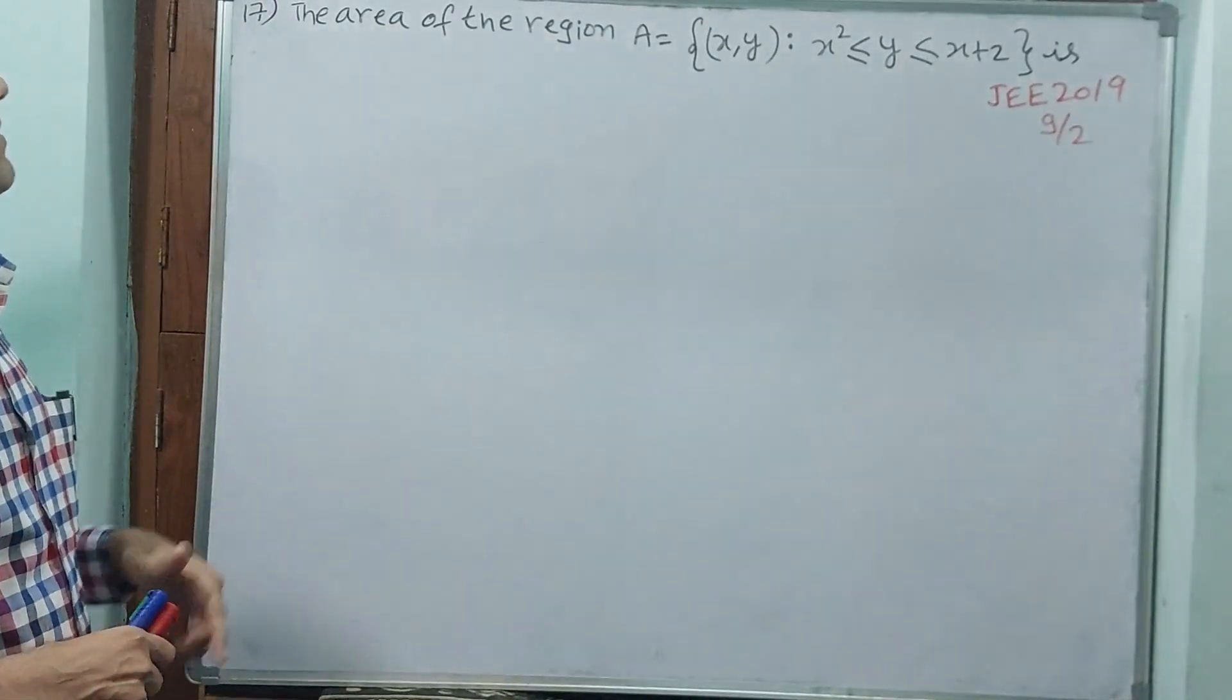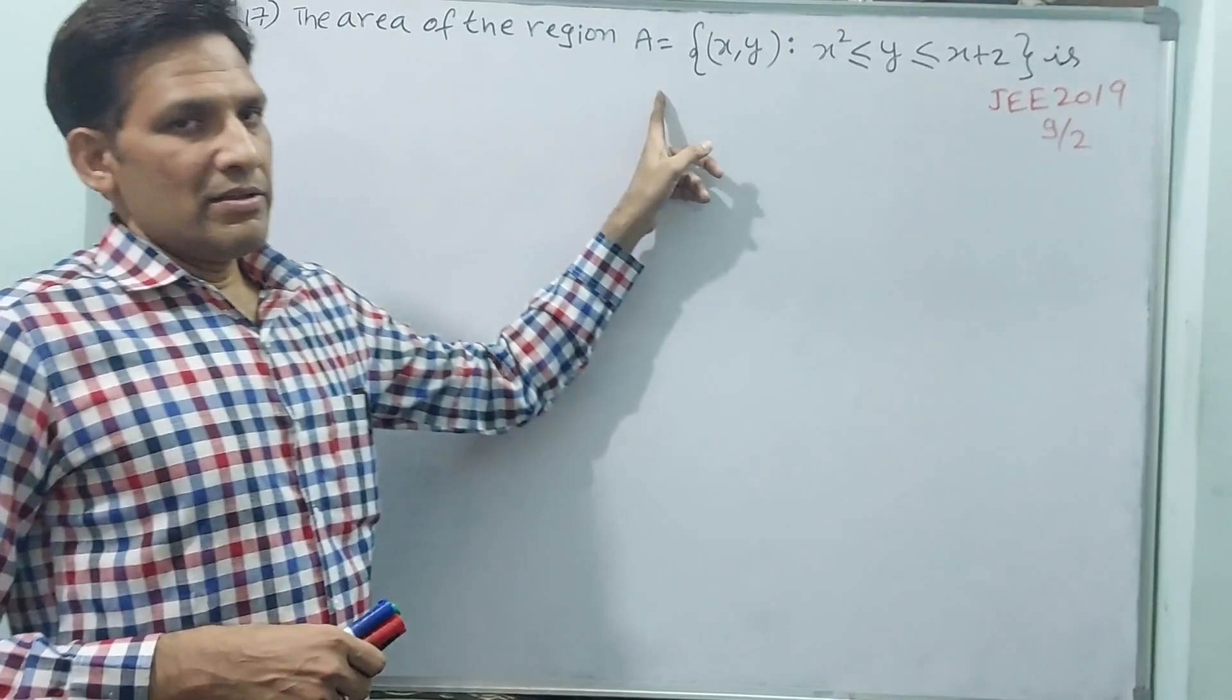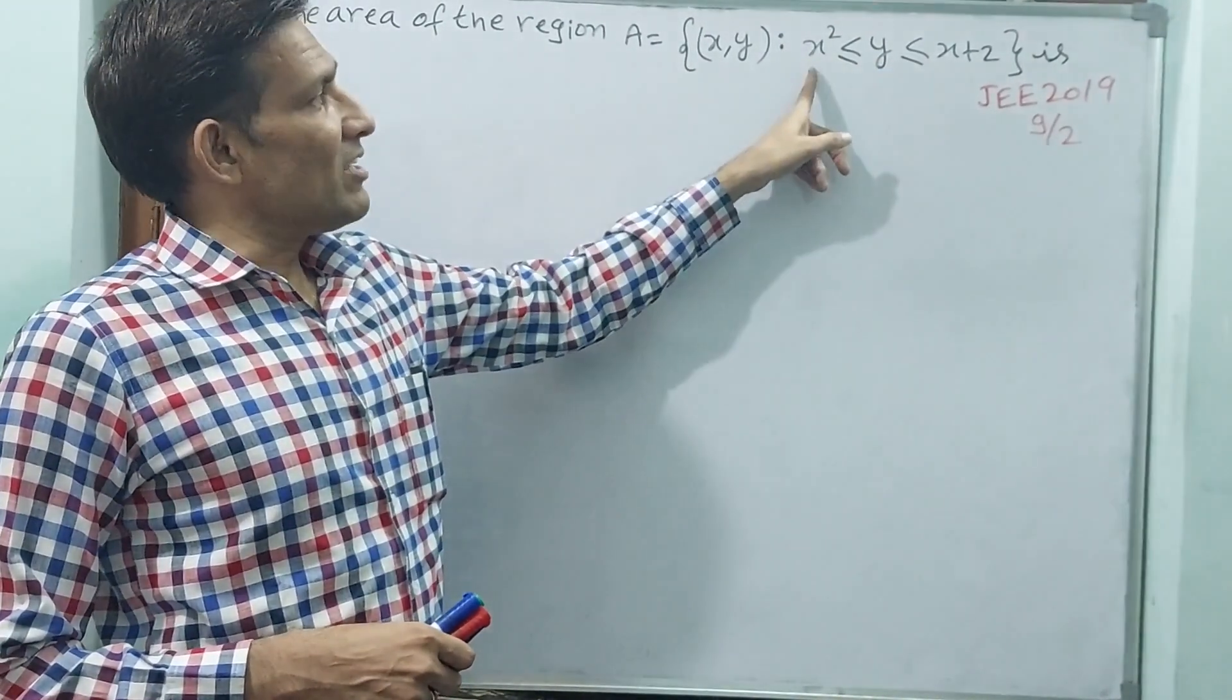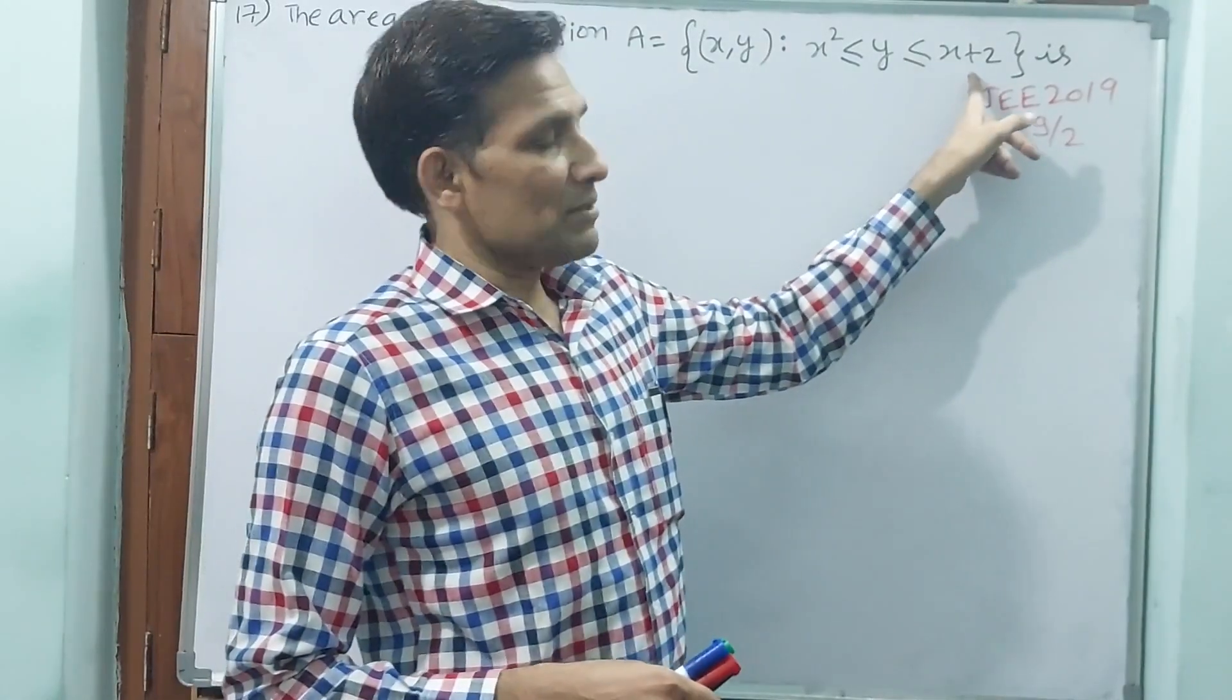See question number 17. The area of the region A for all values of xy, y is greater than or equal to x square and less than or equal to x plus 2.